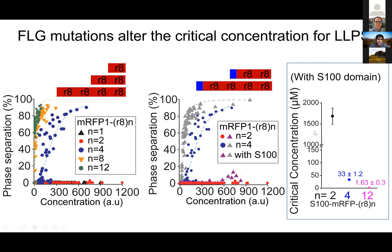We can now quantify this specifically. For n=12 — what a normal human would have — as little as 1.6 micromolar of this protein is sufficient to reach the critical concentration for phase separation. But for someone with a mutation that would truncate the protein to only two repeats, even with the S100 domain, the critical concentration goes to almost 2 millimolar. So you would have to make so much of the protein that it no longer really undergoes phase separation. A person with such a mutation likely wouldn't have the ability to trigger phase separation within those cells.